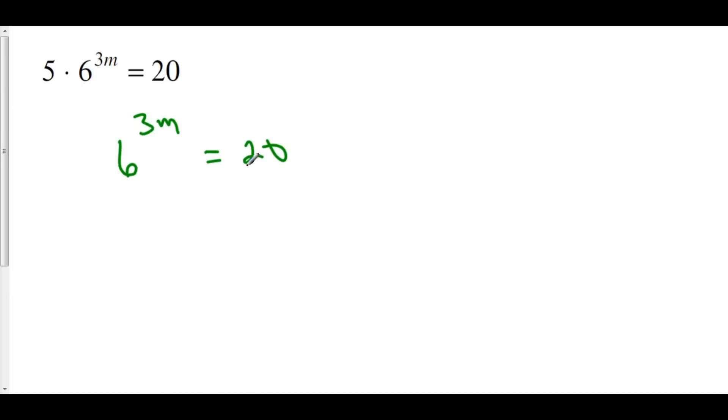When we take the natural log of both sides, we get 3m times the natural log of 6 is equal to the natural log of 20. That means that 3m is equal to the natural log of 20 over the natural log of 6.